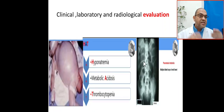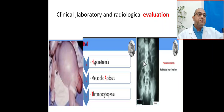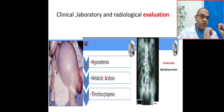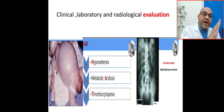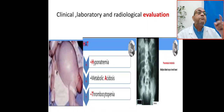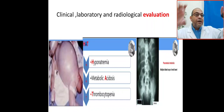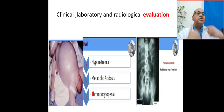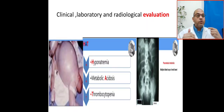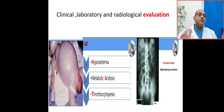For radiological assessment, we use Bell's staging. In Stage 1, findings are non-specific (1A or 1B). In Stage 2A, you see pneumatosis intestinalis — intramural gas. In Stage 2B, you see portal gas. In Stage 3, you see pneumoperitoneum or free perforation.